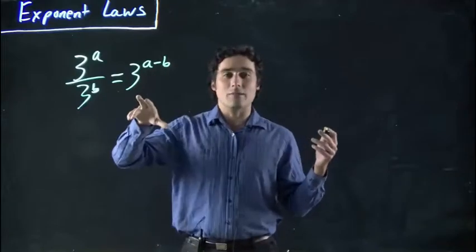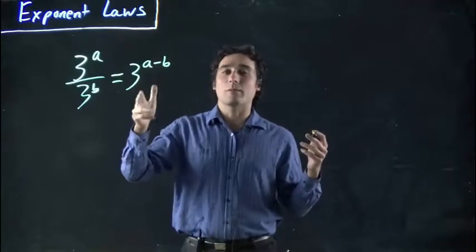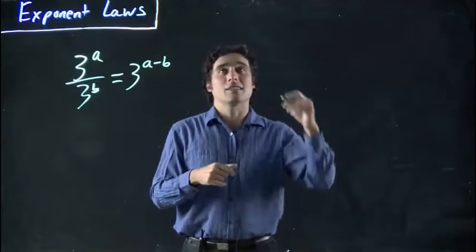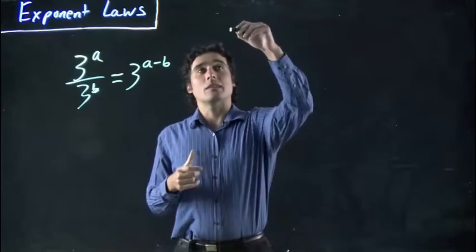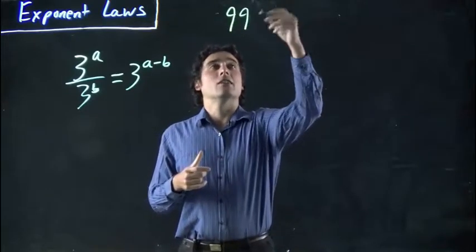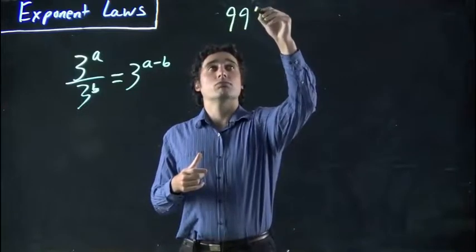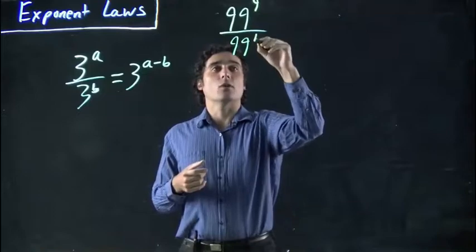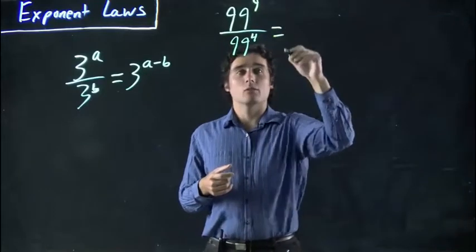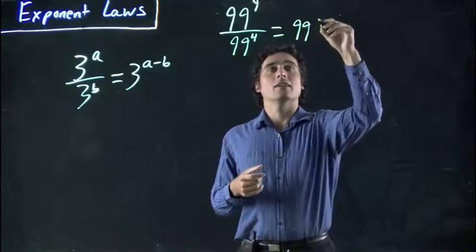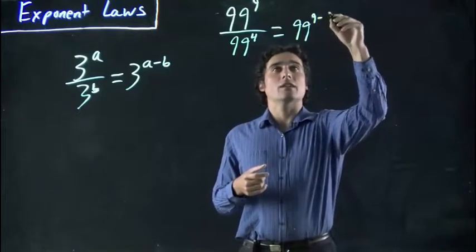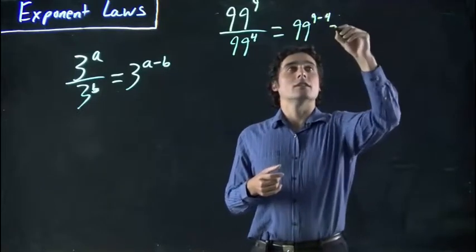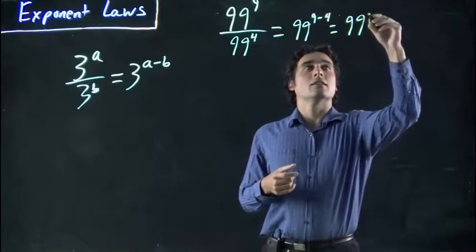And now, remember, the base doesn't actually matter. The rule applies no matter what the base is, as long as it's the same base for both. So I can have something like 99 to the power of 9 and 99 to the power of 4. Well, again, we subtract them. So 99 to the power of 9 minus 4, or in other words, 99 to the 5.